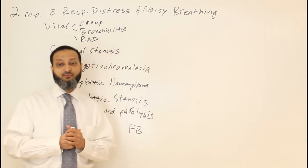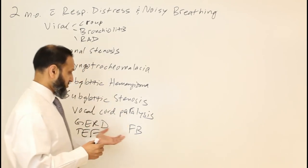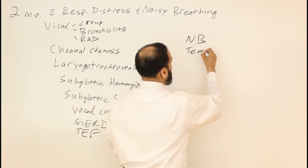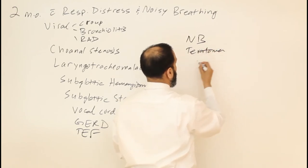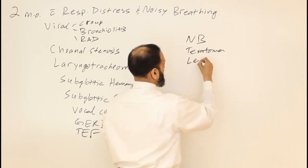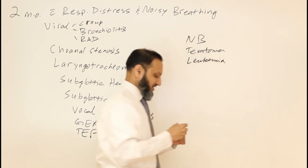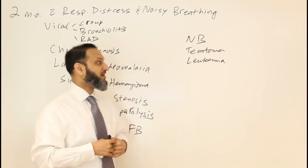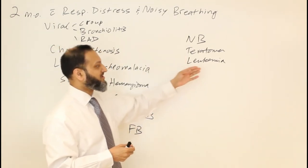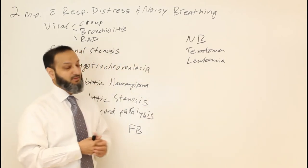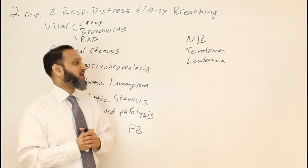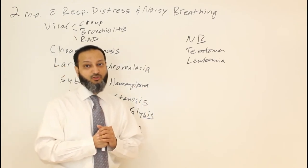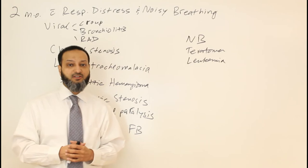Related to compression, tumors are also a consideration. Neuroblastoma or a teratoma are possibilities, as are T-cell leukemia or lymphoma. These can cause external compression on the airway, especially if located in the mediastinum — neuroblastoma in the posterior mediastinum, and teratomas, T-cell leukemias, and lymphomas more in the anterior mediastinum — all leading to chronic noisy breathing and respiratory symptoms.